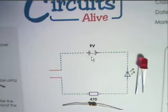The symbol over here is a symbol of a battery. The longer line represents the positive pole of the battery and the shorter line represents the negative pole of the battery.